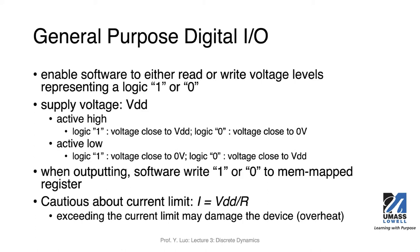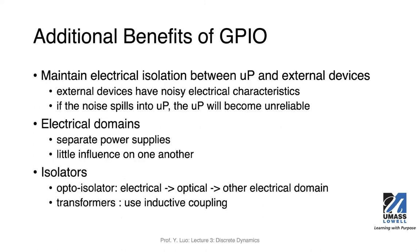We need to be cautious about the current limit. For these low-power embedded microcontrollers, they typically cannot sustain very high current, so there is a current limit. If the current is over the limit, chances are you will damage the chip and it will stop functioning. The current is calculated as voltage divided by resistance. If you exceed that limit, your device may be damaged or overheated.